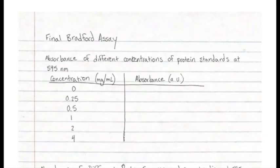You will be recording this data in your notebook, so go ahead and go to your next blank page and title it 'Final Bradford Assay.' You're then going to draw this first data table and put in the title. We are going to be measuring the absorbance of different concentrations of protein standards at 595 nanometers, which is the typical wavelength for a Bradford assay. Pause the video and go ahead and draw this into your notebook.